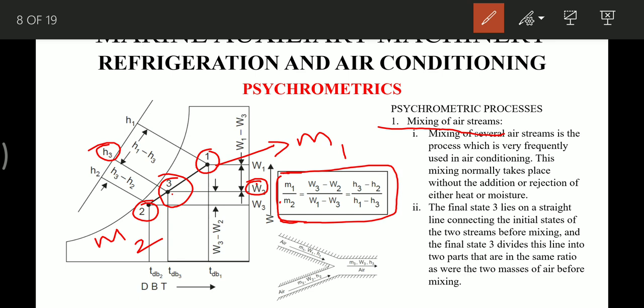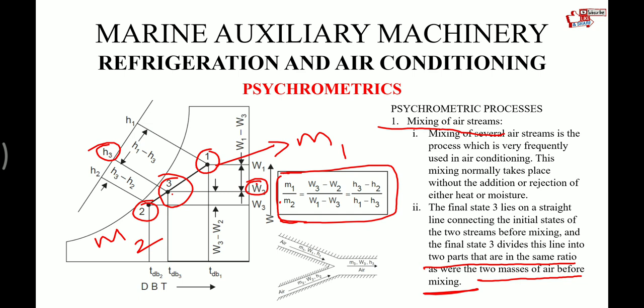Mixing of several air streams is a process very frequently used in air conditioning. This mixing normally takes place without the addition or rejection of either heat or moisture. The final state 3 lies on a straight line connecting the initial states of the two streams before mixing. The final state 3 divides this line into two parts which are in the same ratio as the two masses of air being mixed. So point 3 divides the line in the ratio of the masses in which the air is mixed.